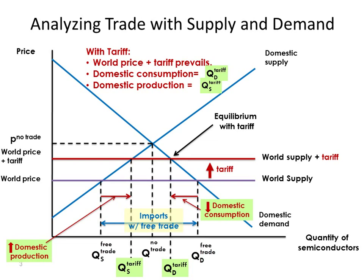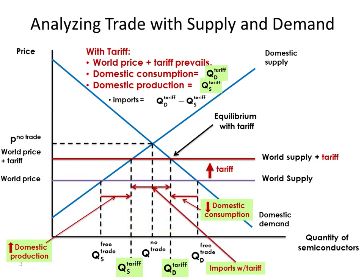What about imports? Imports are the difference between the quantity demanded and the quantity supplied. QD with the tariff is here, QS with the tariff is here, so imports are the difference — this distance right here. Notice that imports have fallen. Finally, a tariff is a tax on imports, so it generates revenue: the tariff amount times the quantity of imports with the tariff. This revenue flows to the government.